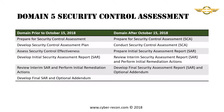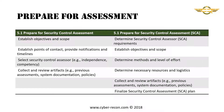Domain 5 has a slight modification with the combination of the first two subject areas. Prior to October 15th, the subject areas are: prepare for security control assessment, develop security control assessment plan, assess security control effectiveness, develop initial security assessment report or SAR, review interim SAR and perform initial remediation actions, and develop final SAR and optional addendum. After October 15th, the subject areas are: prepare for security control assessment, conduct security control assessment, prepare initial security assessment report, review interim security assessment report and perform initial remediation actions, and develop final security assessment report and optional addendum.